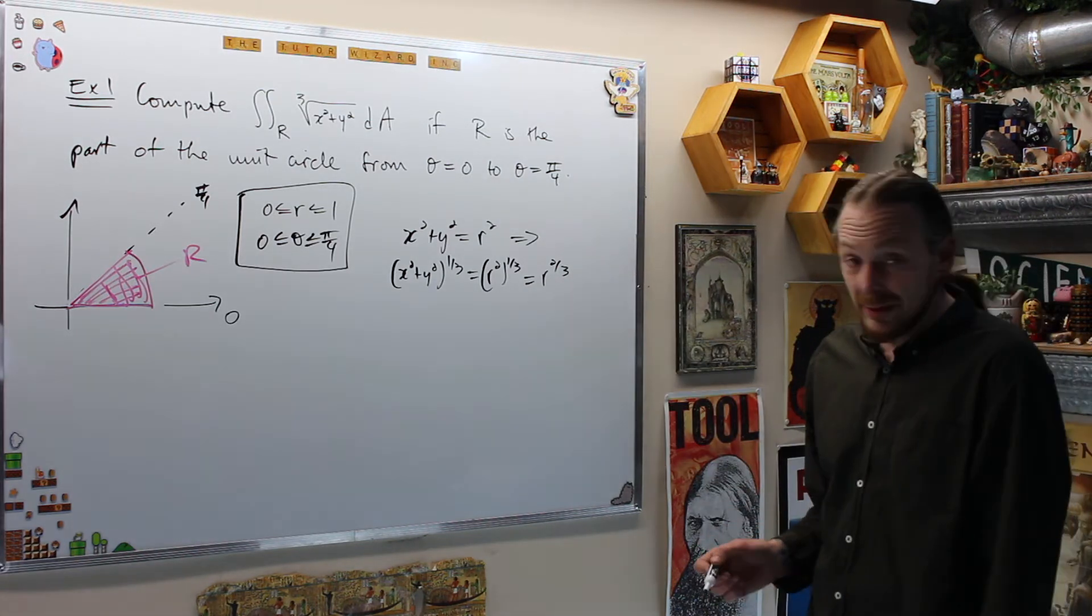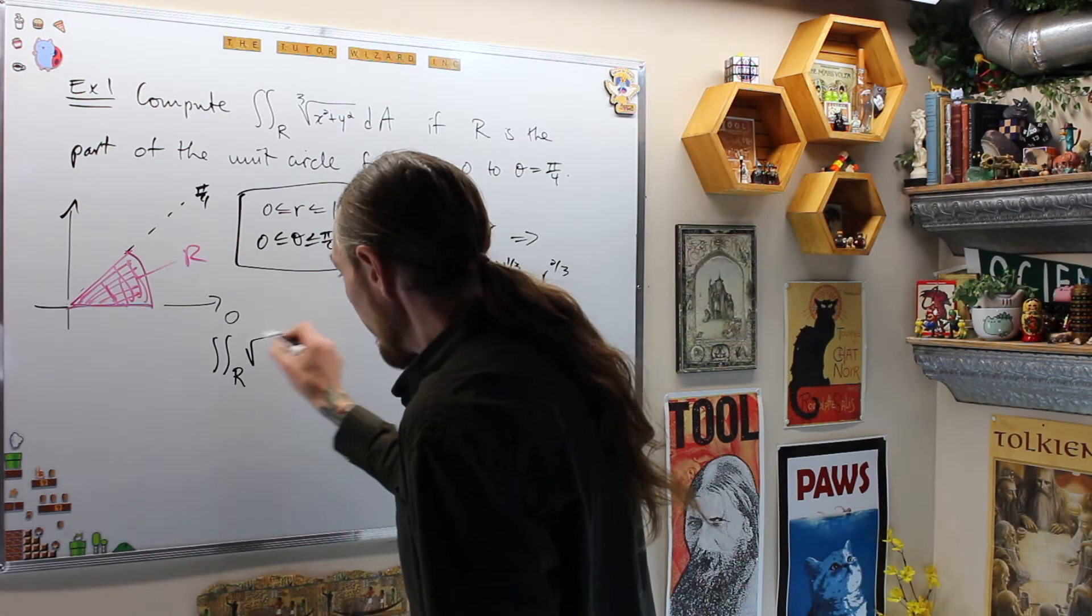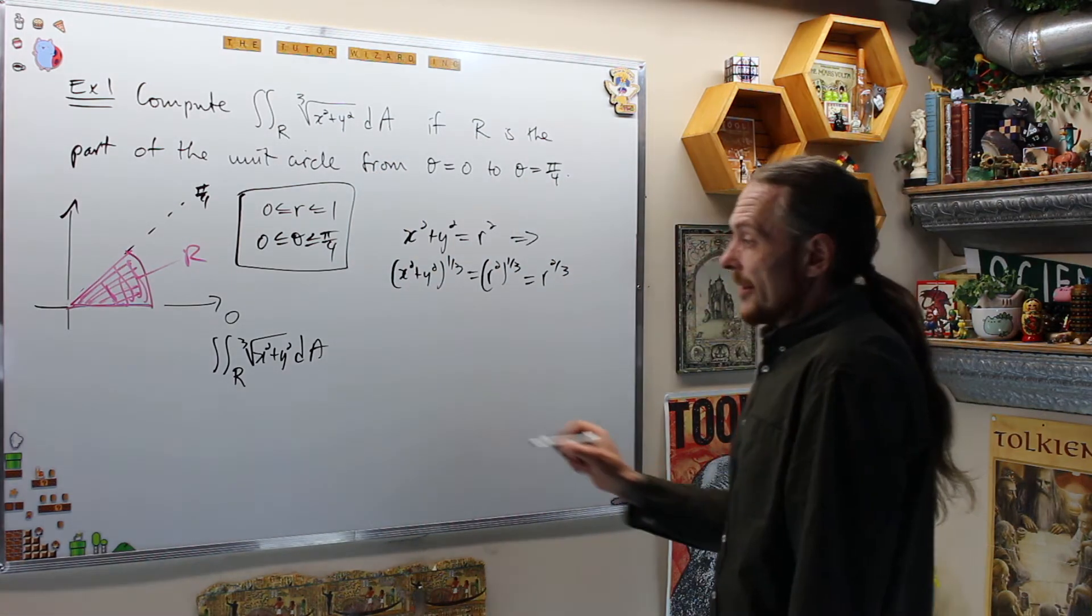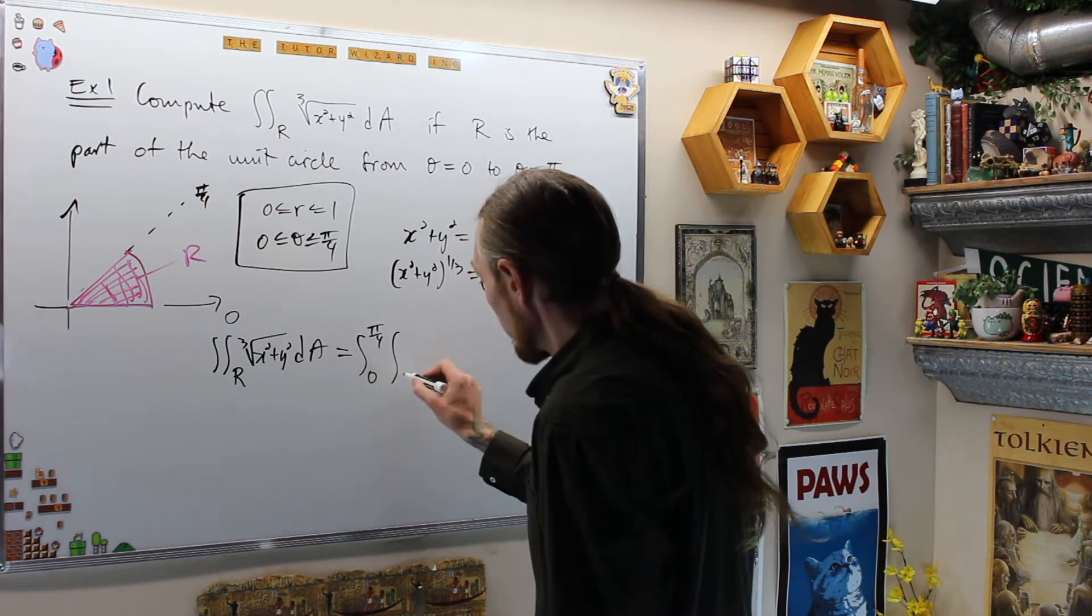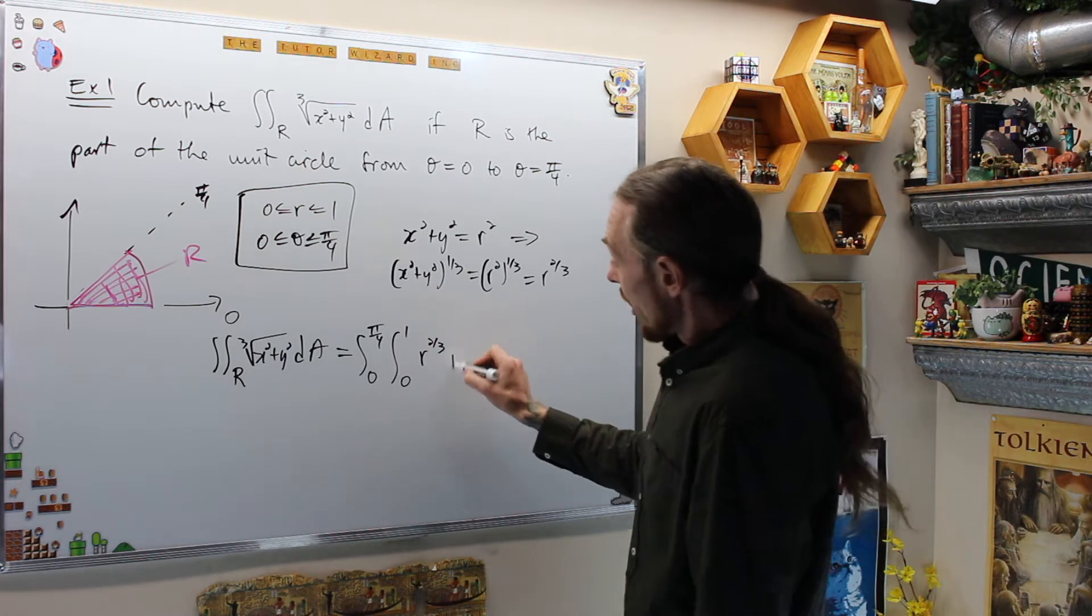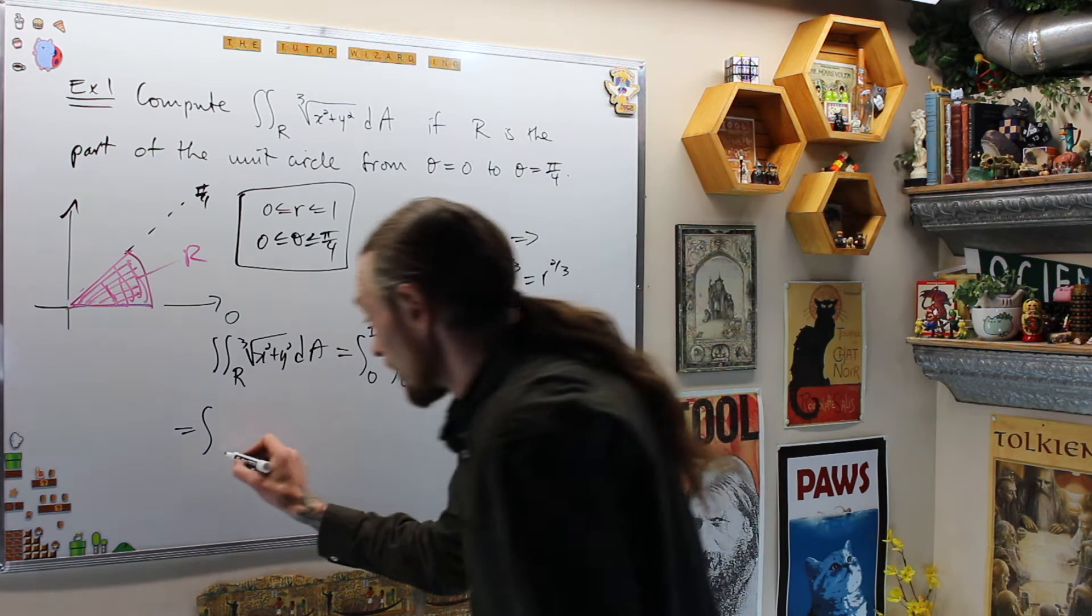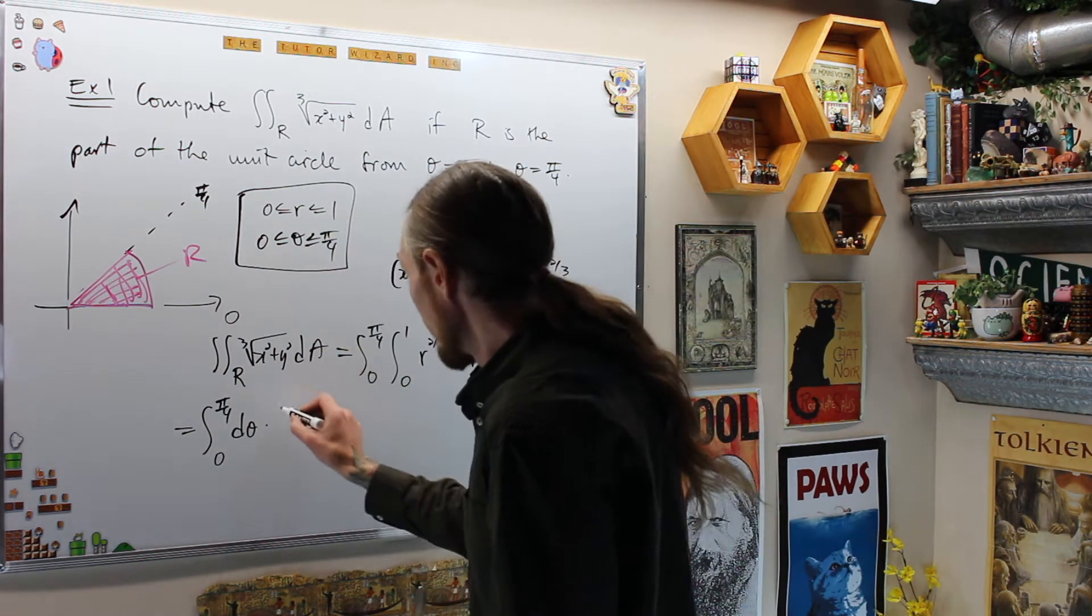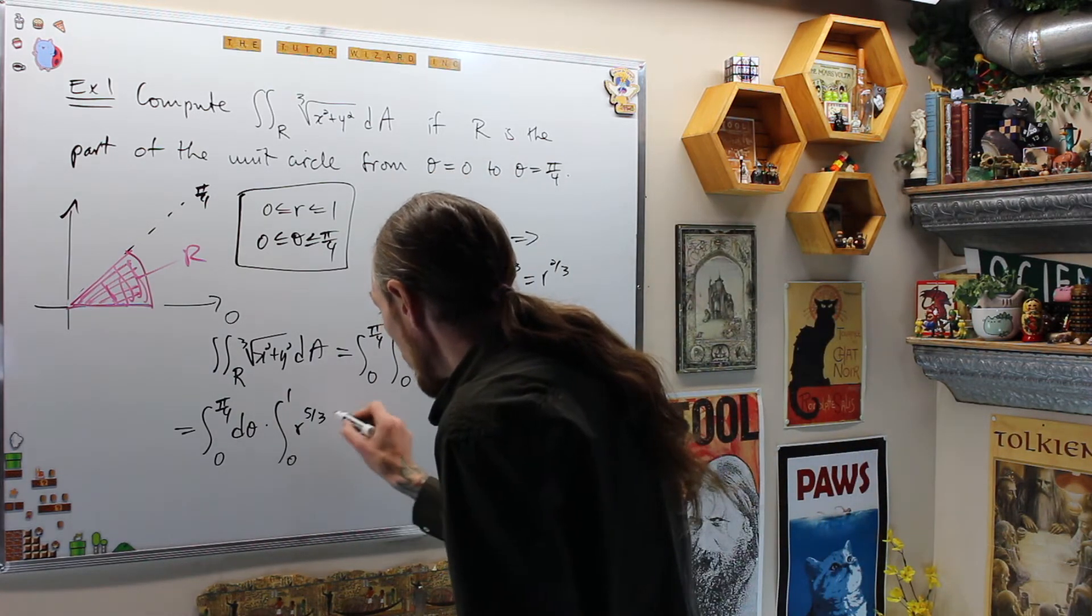Now, I can turn that into the double integral and compute. That says that the double integral over the region R of the third root of x squared plus y squared dA is equal to the integral from 0 to pi over 4, the integral from 0 to 1 of r to the 2 thirds, and then r dr d theta. And I notice that I can separate those, so I will. This is the integral from 0 to pi over 4 of d theta times the integral using the power rule of r to the 5 over 3 from 0 to 1 dr.